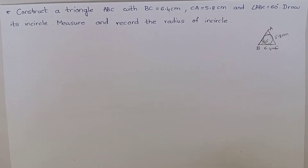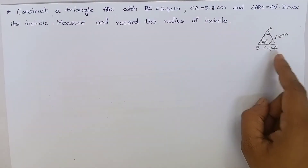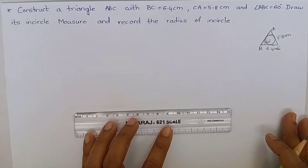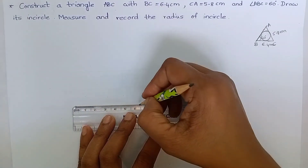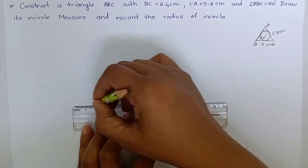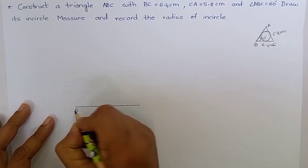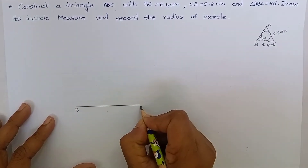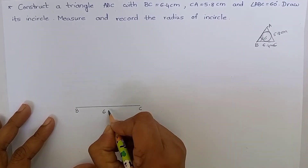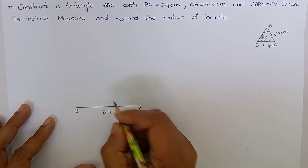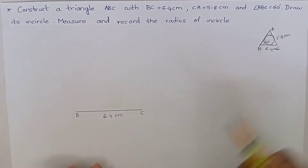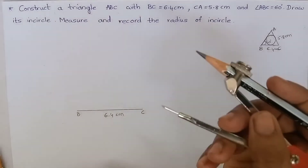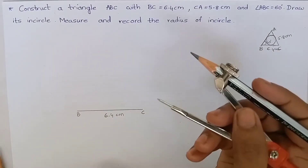Let's start the construction. Mark BC as 6.4 cm. Now mark 60 degrees at B using the compass. You have to mark 60 degrees.